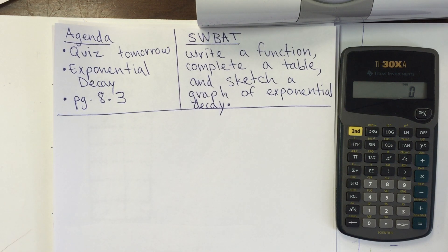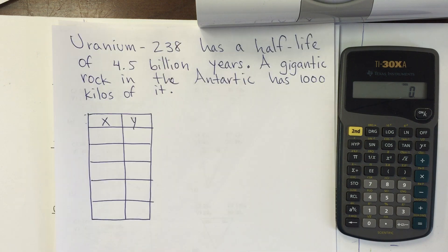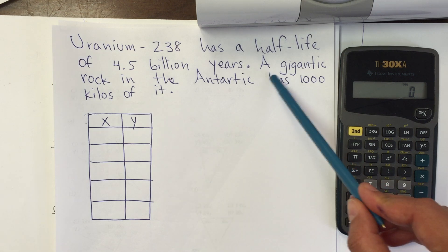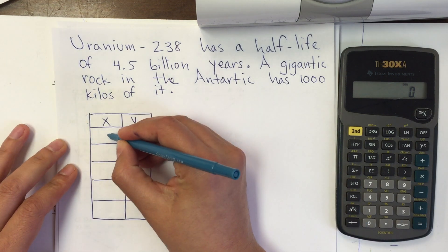Let me tell you a little bit about uranium-238. Uranium-238 has a half-life of 4.5 billion years — it's a very interesting element. It's used a lot in creating bombs, etc. Let's say that a gigantic rock in the Arctic has 1,000 kilos of uranium-238.